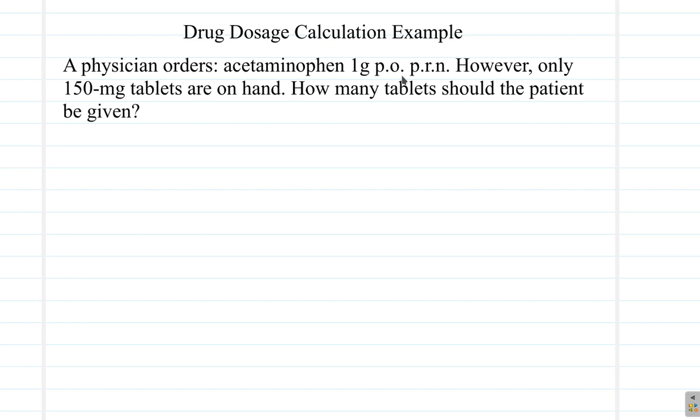Now let's convert 1 gram from our metric knowledge of the metric table. You should know it mentally without looking at the table. It is 1000 mg. Now we have our desired dose in mg and our on-hand dose also in mg.